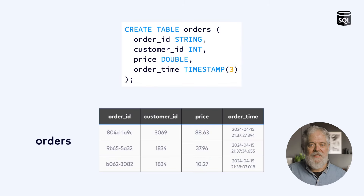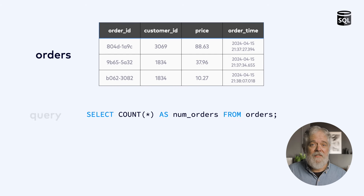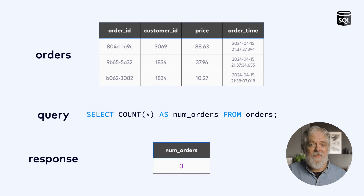Databases hold data that are stored in tables using storage managed by the database. Tables have names, like this orders table, and tables store rows of data organized into columns that have names and data types. This orders table has columns for the order ID, the customer ID, the price, and the time the order was placed. Databases respond to queries like this one, and the result of this query is a number telling us how many rows of data are in the orders table right now.